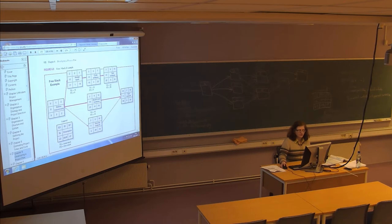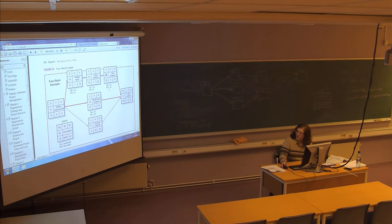Going to chapter six, page 173, you can see the total slack here is 15 — that's what we calculated. The total slack is 15 here and 15 here. But the free slack is only given to the last node in the chain. So it's 15 as the free slack at the end, but it's zero at the preceding nodes.